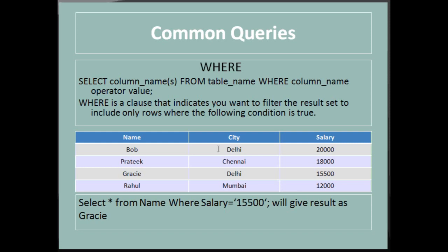Next is WHERE: 'SELECT column_name FROM table_name WHERE column_name operator value'. WHERE is a clause that filters results to include only rows where the given condition is true. For example, to find the name of the person whose salary is 15,500, you would run 'SELECT * FROM name WHERE salary = 15,500', which would return the result as Gracie.